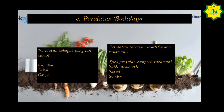Yang kelima, peralatan budidaya. Peralatan sebagai pengolahan tanah yaitu cangkul, sekop, dan garpu. Peralatan untuk pemeliharaan tanaman terdiri dari sprayer atau alat semprot tanaman, sabit atau arit, koret, dan gembor.